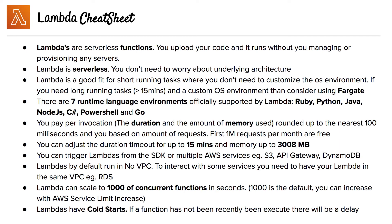You can trigger Lambdas from the SDK or multiple AWS services, such as S3, API Gateway, and DynamoDB. Lambdas by default run in no VPC. To interact with some services, you need to have your Lambda in the same VPC — for example, in the case of RDS, you'd have to have your Lambda in the same VPC as RDS.